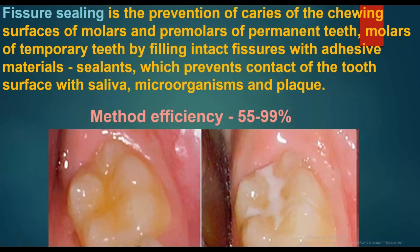Fissure sealing is a prevention of caries of the chewing surface of molars and premolars of permanent teeth and molars of temporary teeth, by filling intact fissures with adhesive materials — sealants — which prevent contact of the tooth surface with saliva, microorganisms, and plaque. Method efficiency ranges from 55 to 99%.